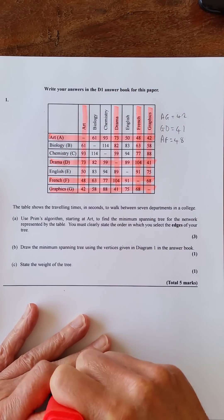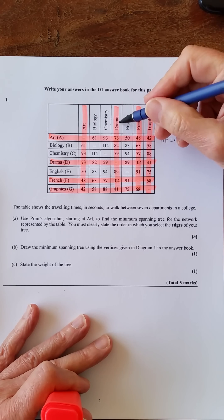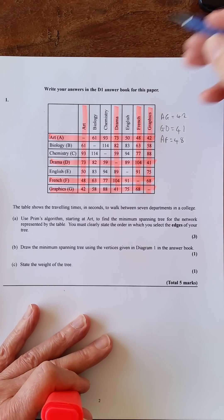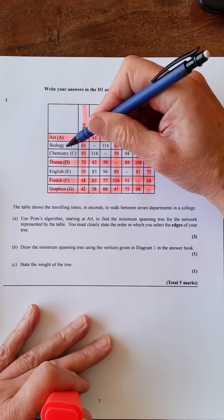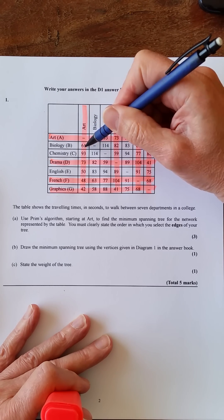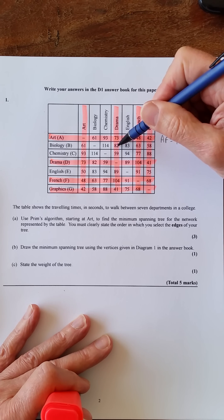So what we'll do is highlight that and cross this out, so we don't look along there. Now we're looking down A, D, F, and G, looking down A, D, F, and G for the shortest from the ones that's left, so we've got B, C, and E.